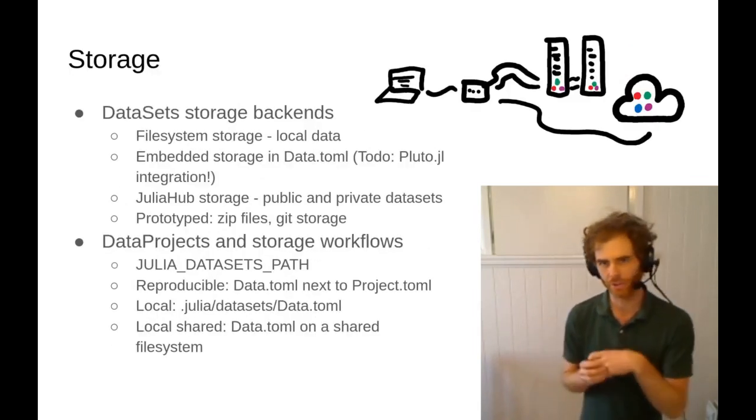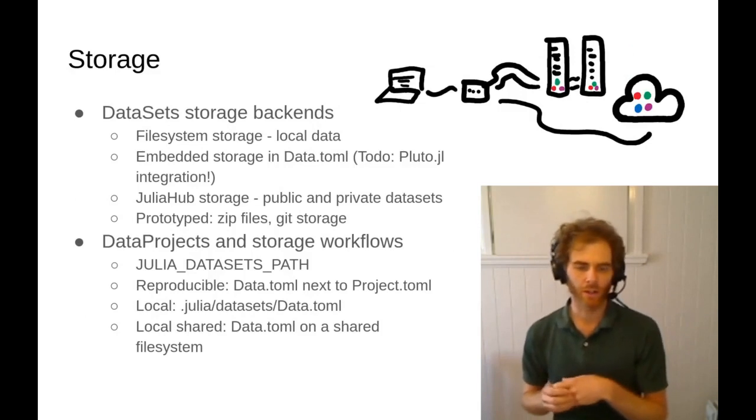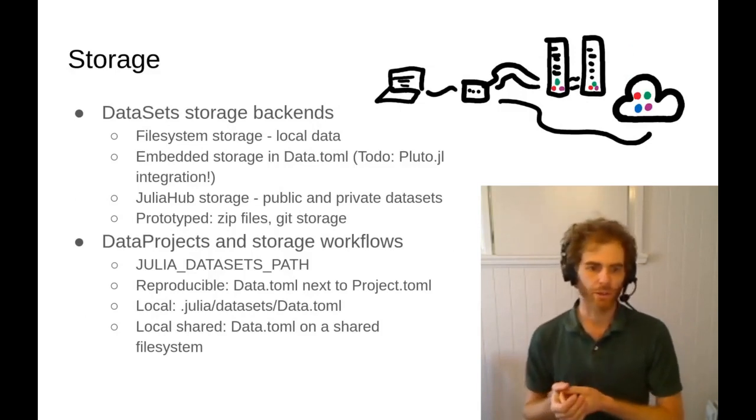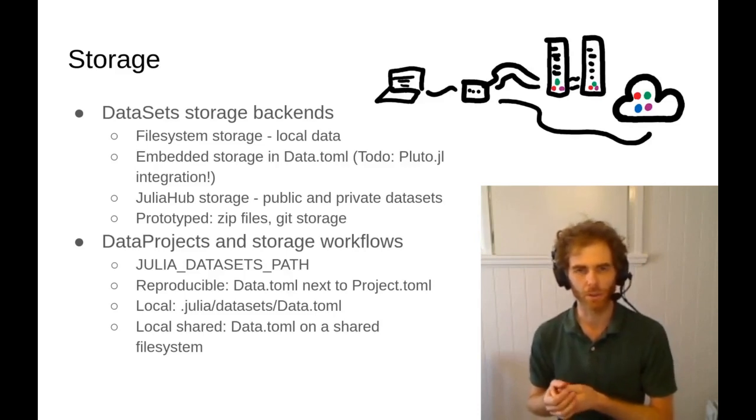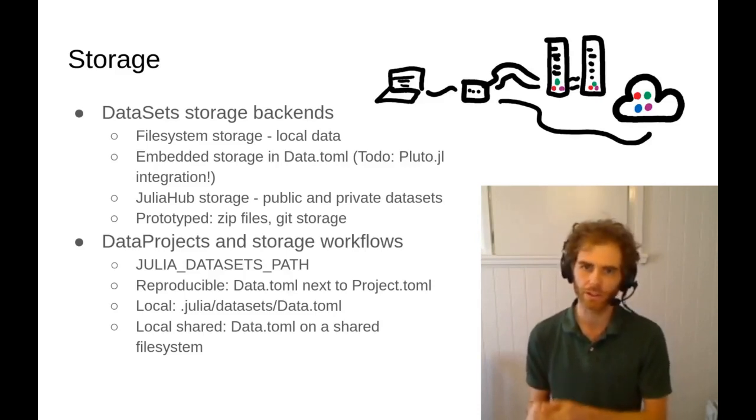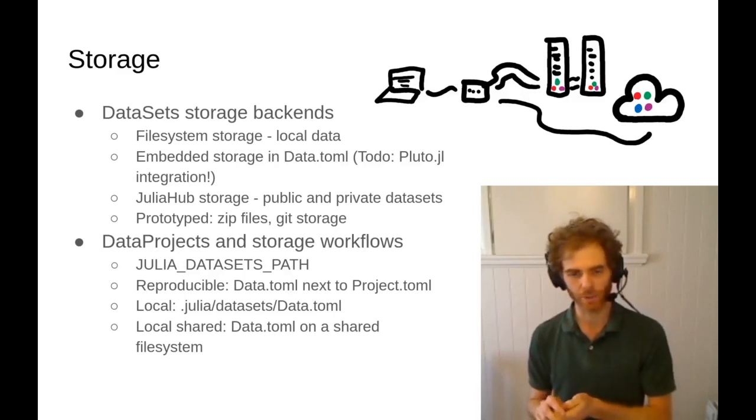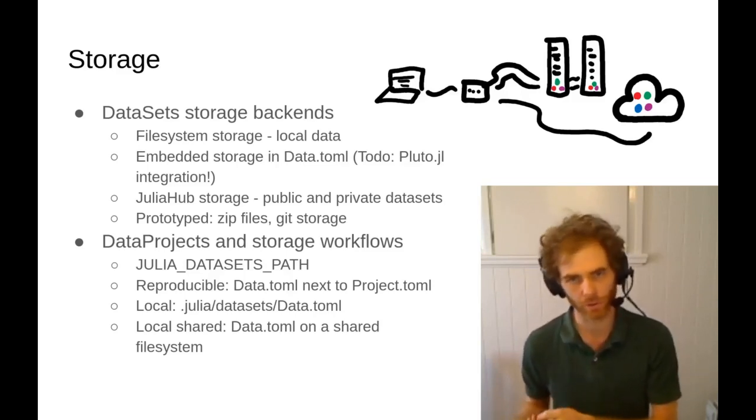So what storage have we implemented so far? Obviously, there's a file system backend for local data. I've also got an embedded storage, which I'm hoping will help with Pluto integration. As part of developing JuliaHub, we have a JuliaHub storage backend, which can give you access to public and private data sets within the JuliaHub compute platform.